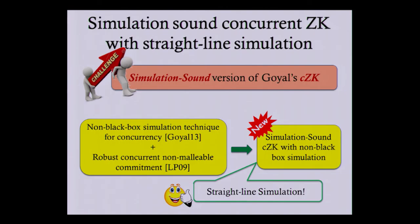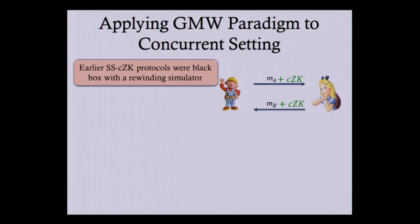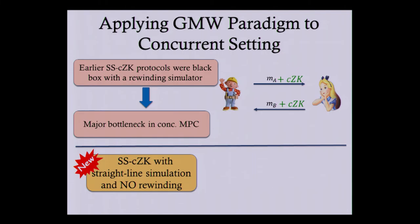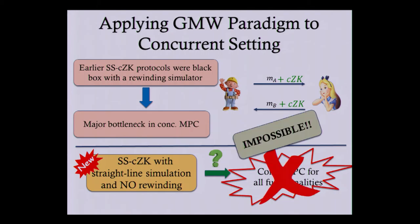Going back to the GMW paradigm: we want to compile a semi-honest protocol with the ZK protocol. Earlier, all known protocols for simulation-sound concurrent ZK were black-box and had a rewinding-based simulator. This rewinding was shown to be the major bottleneck to getting concurrent MPC. Now we have a simulation-sound concurrent ZK with a straight-line simulation — no rewinding. But this alone cannot give concurrent MPC for all functionalities, as we know from the long list of impossibility results.